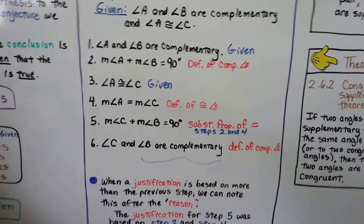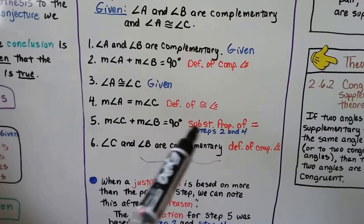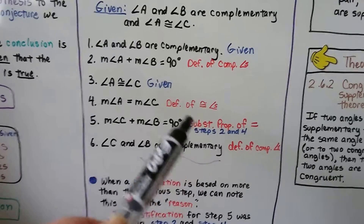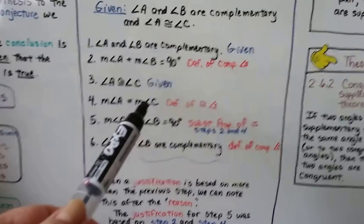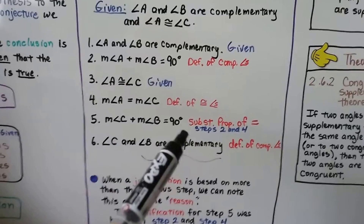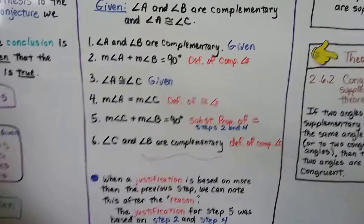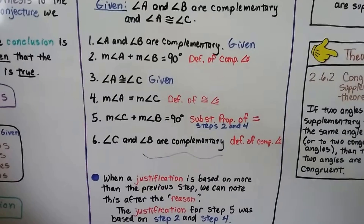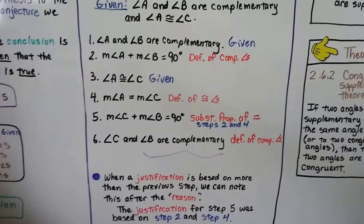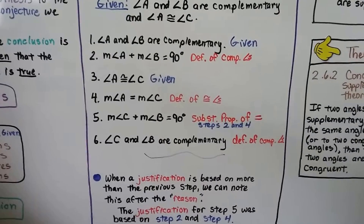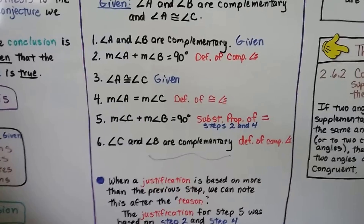Our final statement, number six, is angle C and angle B are complementary. Our justification is the definition of complementary angles. Normally our justification is based on the previous statement, but this one was based on two previous ones — steps two and four.